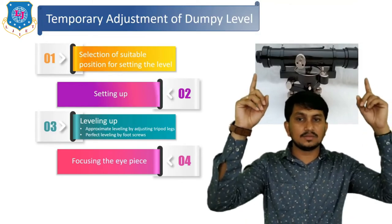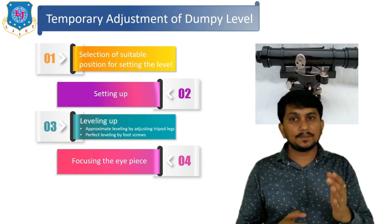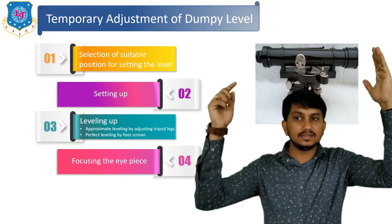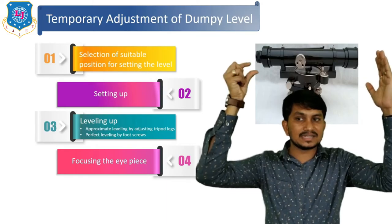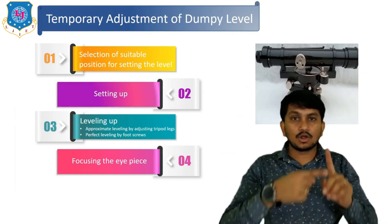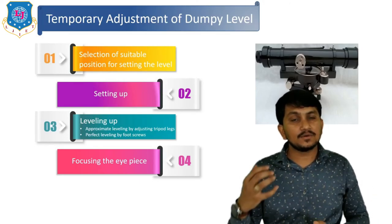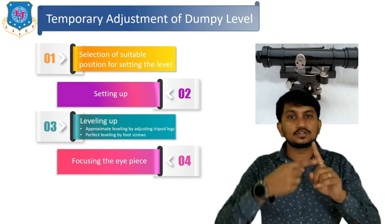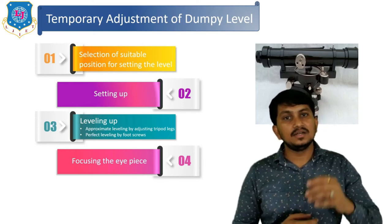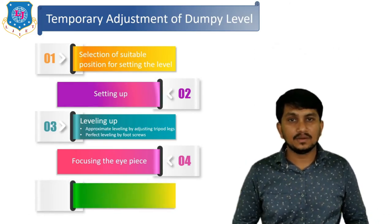The fourth step is focusing of the eyepiece. To focus the eyepiece, hold a blank white paper in front of the object glass, look through the eyepiece, and adjust the eyepiece screw. By adjusting this screw, the crosshair in the telescope is sharpened so that a distinct image can be observed while sighting the object.